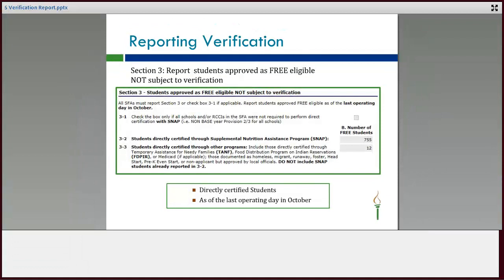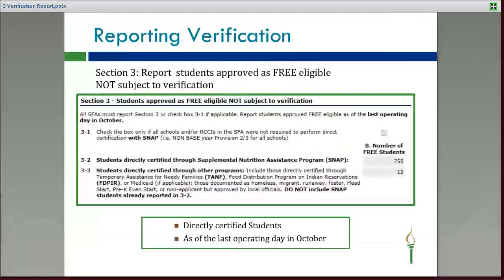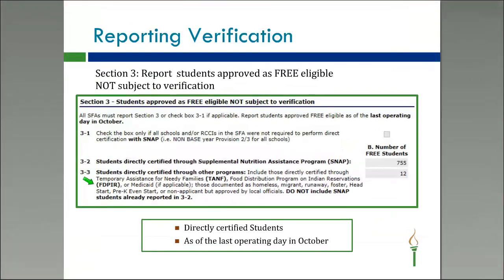Section 3 is where you will report the directly certified students. In Section 3-2, you'll report your SNAP students — students directly certified through the Supplemental Nutrition Assistance Program. All your directly certified SNAP students will be reported in Section 3-2, as of the last operating day in October.